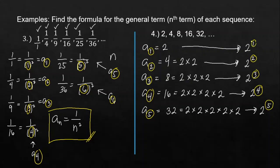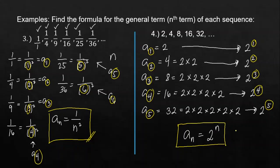So the general term formula for example number 4 is a_sub_n equals 2 raised to n. Whatever our n is — say 11 — the result will be 2 raised to 11, or whatever its simplified form is. That's how we find the general term formula.